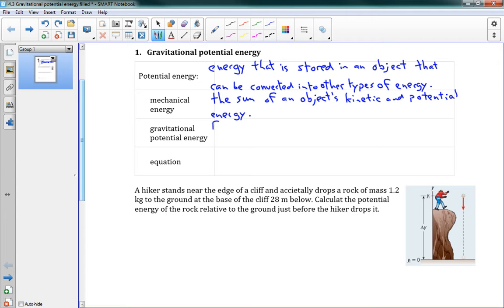Now our symbol for gravitational potential energy, that's EG, and this is the stored energy due to an object's position.